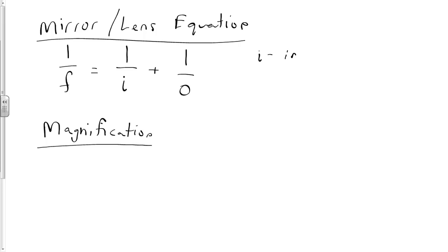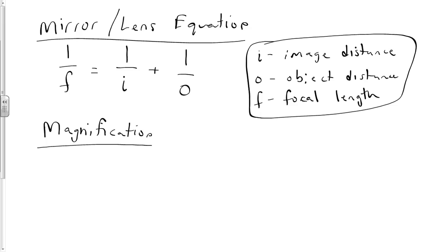I is the image distance, o is the object distance, f is the focal length. All of these are measured from the mirror or the lens. All those values in there are from the mirror or with respect to the mirror or the lens.